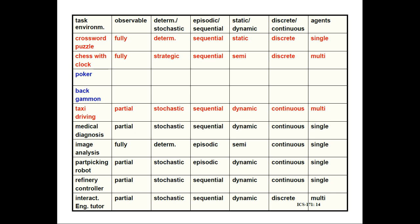For various agents — crossword puzzle, chess with clock, poker, backgammon, taxi driving, medical diagnosis, image analysis, part-picking robot, refinery controller, and English tutor — we identify their task environments. For example, the crossword puzzle environment is fully observable, deterministic, sequential, static, discrete, and single-agent.